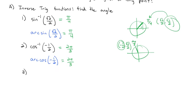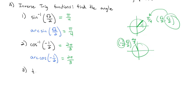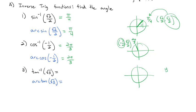We can do an arc tangent as well. Let's do the tangent inverse of the square root of 3, which is the same thing as the arc tangent of the square root of 3. We draw our unit circle. Tangent is y over x, so we want root 3 over 1. Usually with tangent the over 2 divides out, so the y-coordinate is root 3 over 2 and the x-coordinate is 1 half. That gives us pi over 3, which is at the point 1 half comma root 3 over 2. So the arc tangent of the square root of 3 is pi over 3.